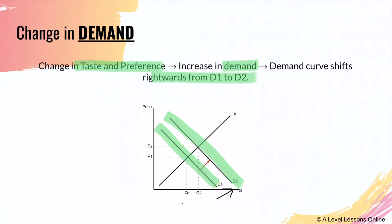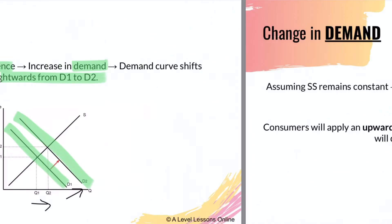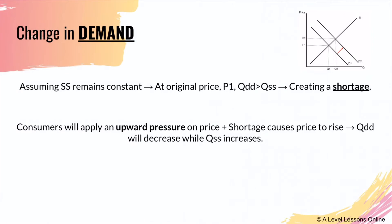You can see there was an increase in quantity from Q1 to Q2 and an increase in price from P1 to P2. You always have to state assumptions in economics - assuming that supply remains constant. What actually happens is that at the original price P1, quantity demanded exceeds quantity supplied, hence creating a shortage.